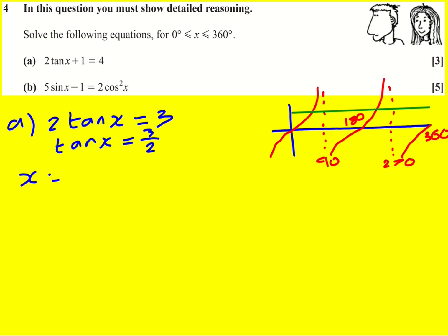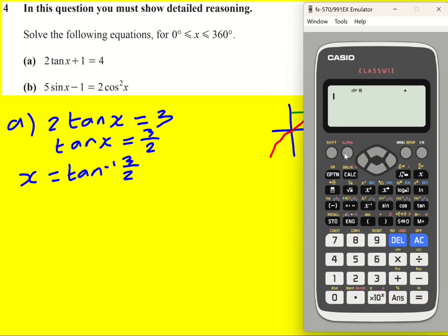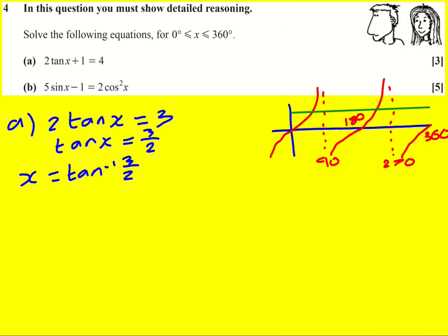So first up, x is going to be inverse tan of 3 over 2. Now this is a function, or you can just write 3 divided by 2 and make it 56.309. And that is going to be this first solution here. You can see it's less than 90.